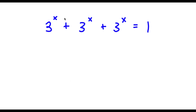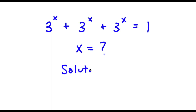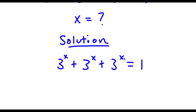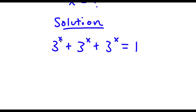Alright, so I have 3 to the power of x, plus 3 to the power of x, plus 3 to the power of x, is equal to 1. I want to find the value of x here. For my solution, I'm going to start by factoring out 3 to the power of x from the left hand side.